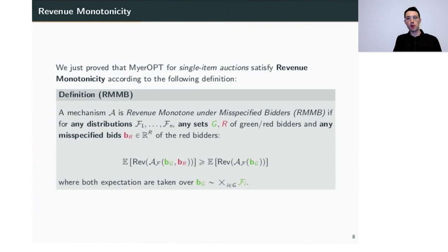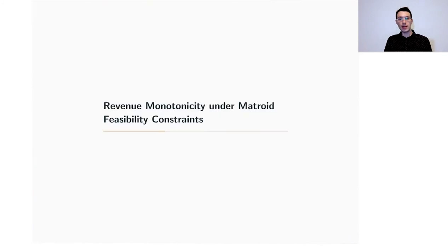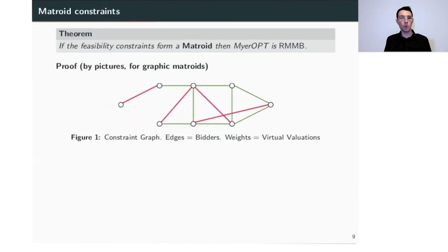Here is the formal definition of what I proved, which I call revenue monotonicity under misspecified bidders. A mechanism A is RMB if the following inequality holds for any distributions, any partition of bidders into green and red, and any specified bids of the red bidders. What we just proved is that Myerson's optimal mechanism is RMB. Let's see if this generalizes when feasibility constraints are general matroids, not just uniform rank-one matroids — and indeed we proved it holds. If the feasibility constraints form a matroid, then Myerson's optimal mechanism is RMB. I will provide the proof for graphic matroids only, but it generalizes easily.